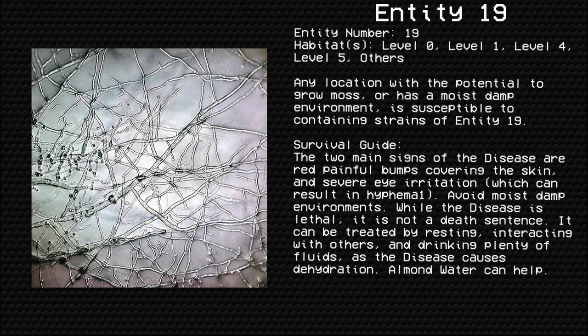Entity 19, the disease. Entity number 19. Habitats: level 0, level 1, level 4, level 5, others. Any location with the potential to grow moss, or has a moist damp environment, is susceptible to containing strains of Entity 19.